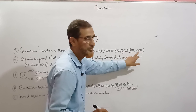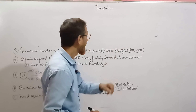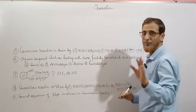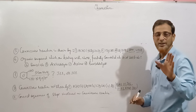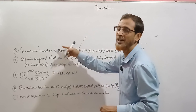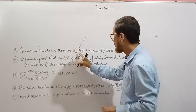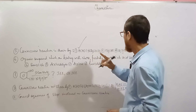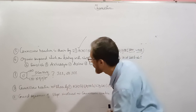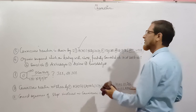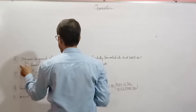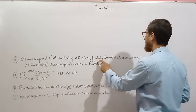Question 5: Cannizzaro reaction is shown by which of the following — HCHO, CH₃CHO, PhCHO? The condition is that the aldehyde must have no alpha hydrogen. HCHO has no other carbon, so no alpha hydrogen — it will show Cannizzaro reaction. PhCHO (benzaldehyde) has no alpha hydrogen — it will show. But CH₃CHO has alpha hydrogen, so it will not show Cannizzaro reaction. Answer: HCHO and PhCHO show Cannizzaro reaction.